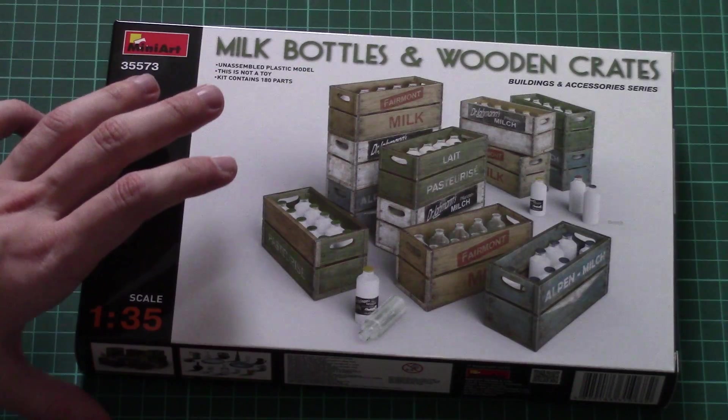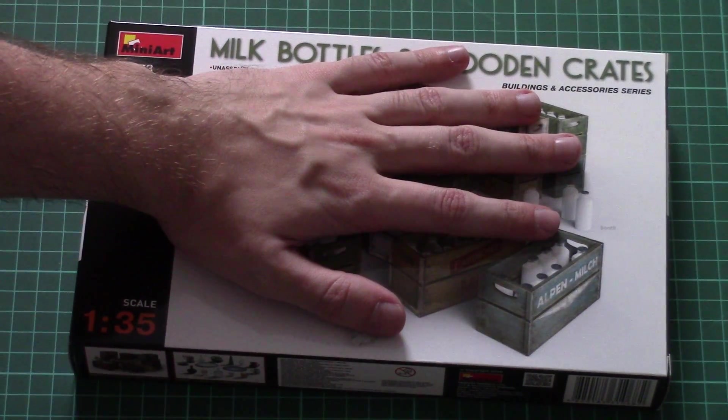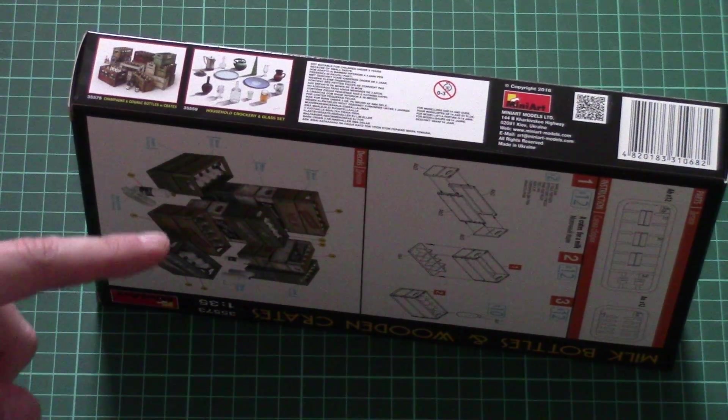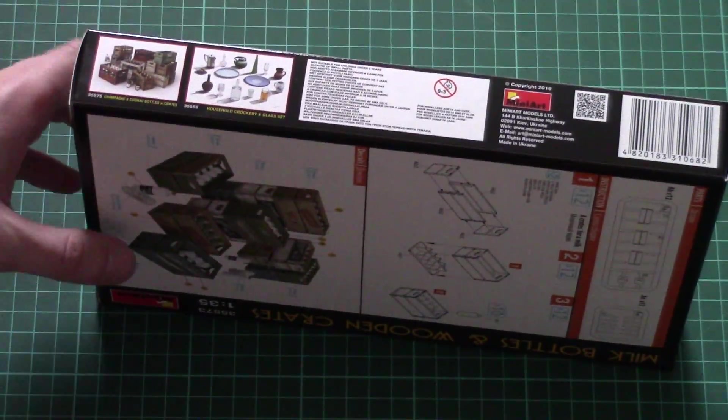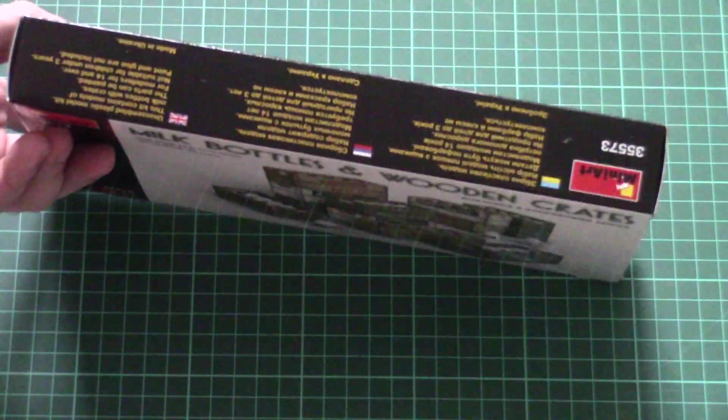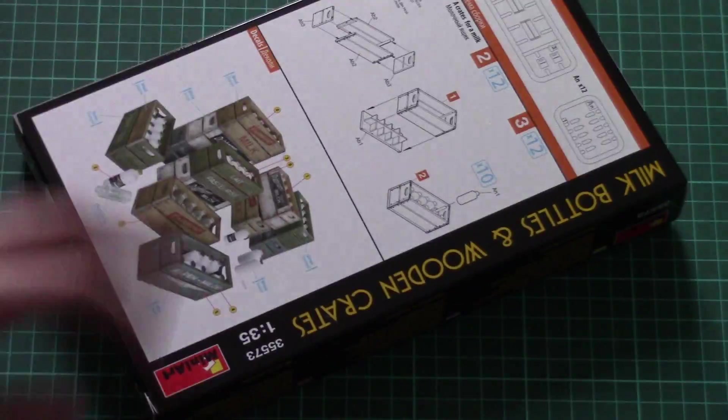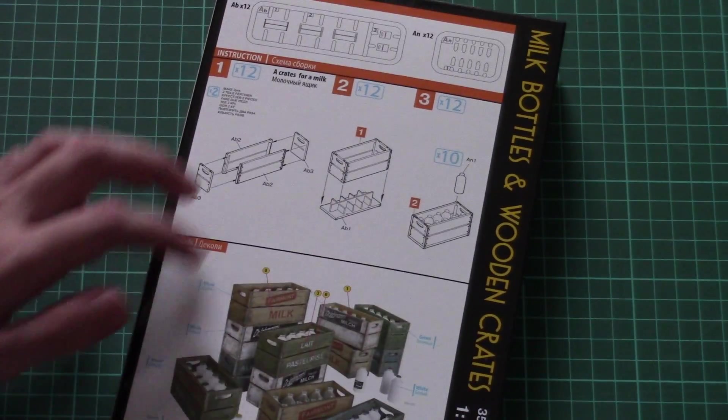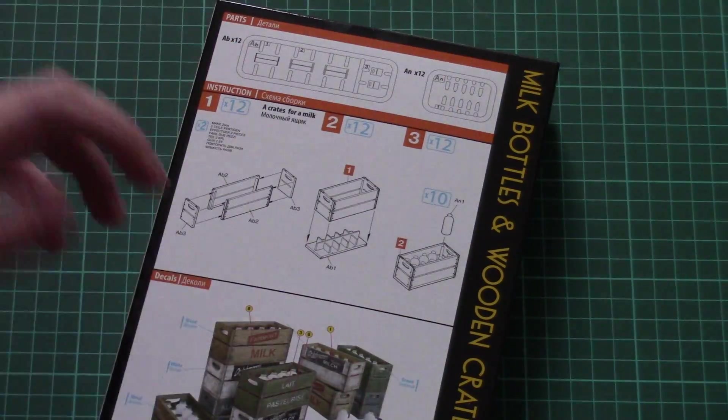There are 180 plastic parts inside. Here you can see comparison with my hand size. Here we have small pictures of other sets available from this manufacturer - you can find the reviews on our YouTube channel as well. And here is some safety information and assembly manual and painting manual, as well as a parts map.